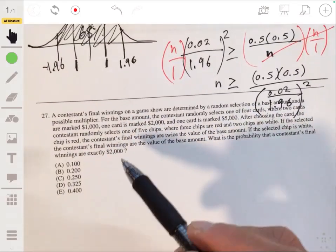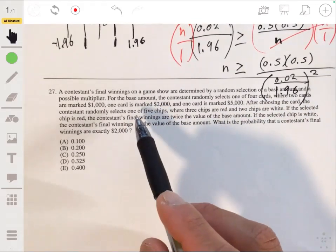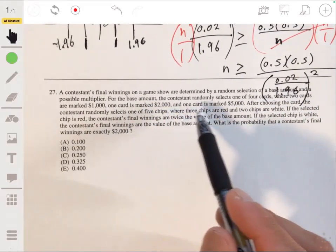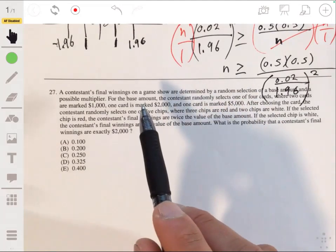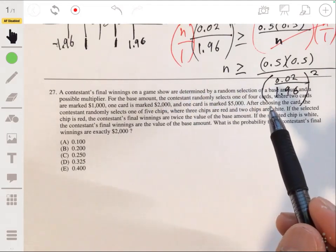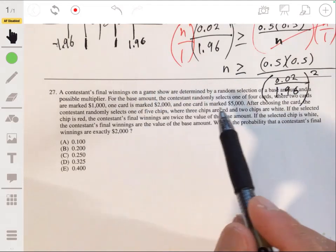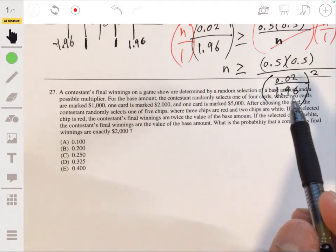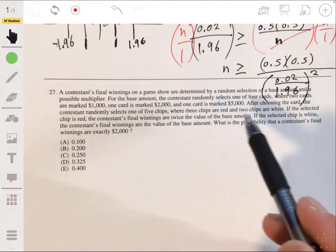All right, 27. The contestant's final wins on a game show are determined by a random selection of the base amount and a possible multiplier. For the base amount, the contestant randomly selects one of four cards, where two cards are marked $1000, one card is marked $2000, and one card is marked $5000. After choosing the card, the contestant randomly selects one of five chips,